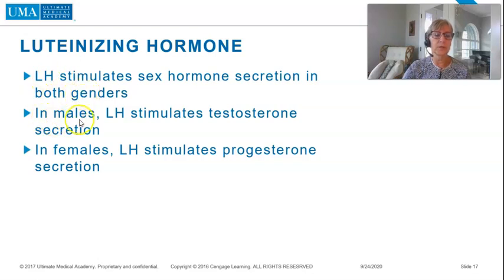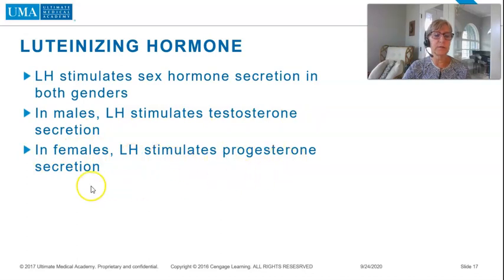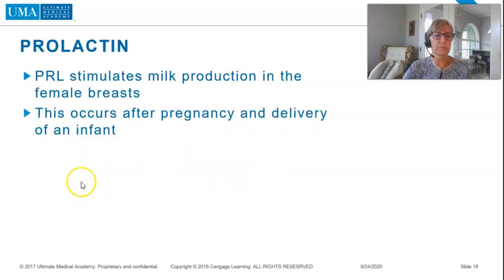In males, LH stimulates testosterone secretion. In females, LH stimulates progesterone secretion. Prolactin, PRL, stimulates milk production in the female breast, occurring after pregnancy and delivery of an infant.